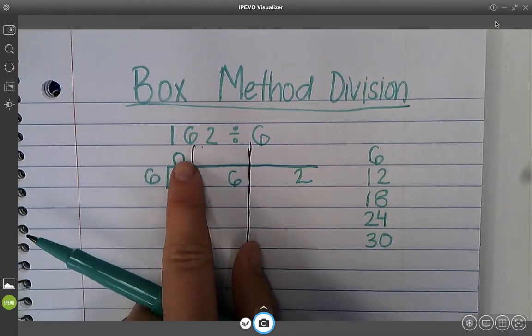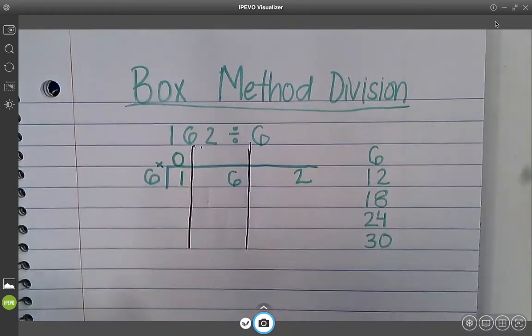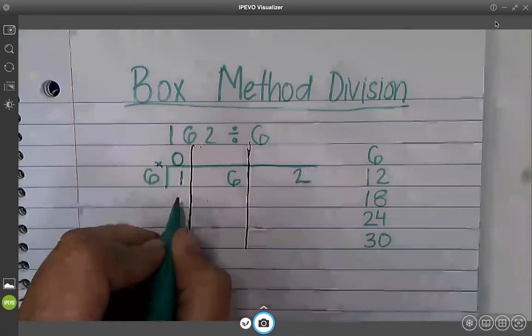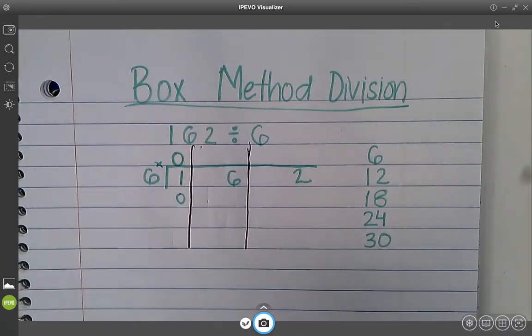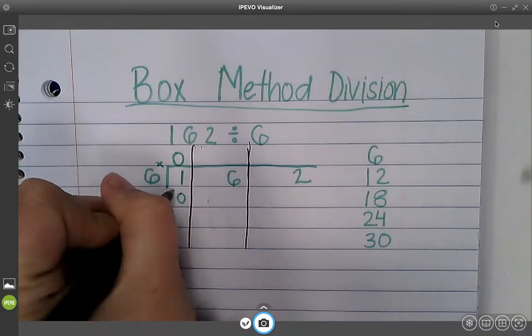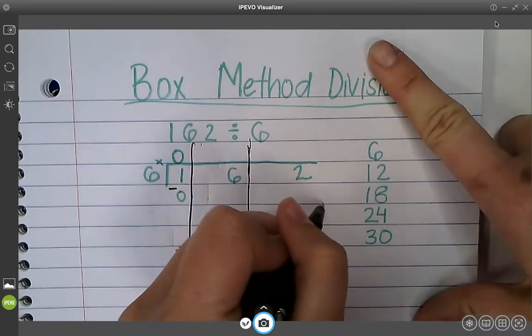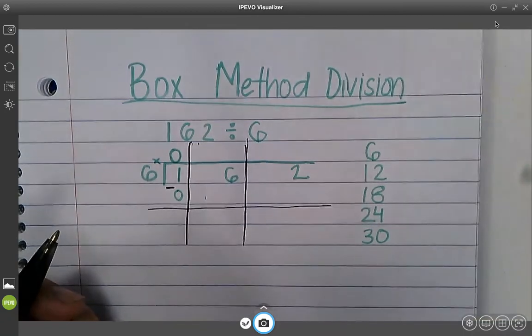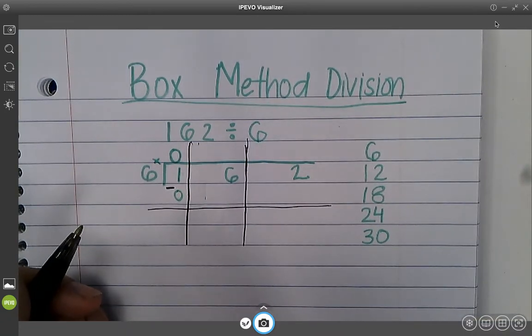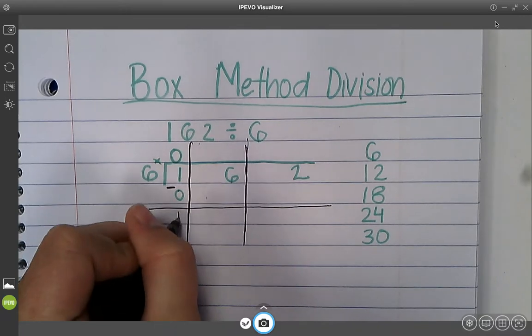6 times 0, you can put a multiplication sign there, is 0. Okay, then I subtract. 1 minus 0 is 1.